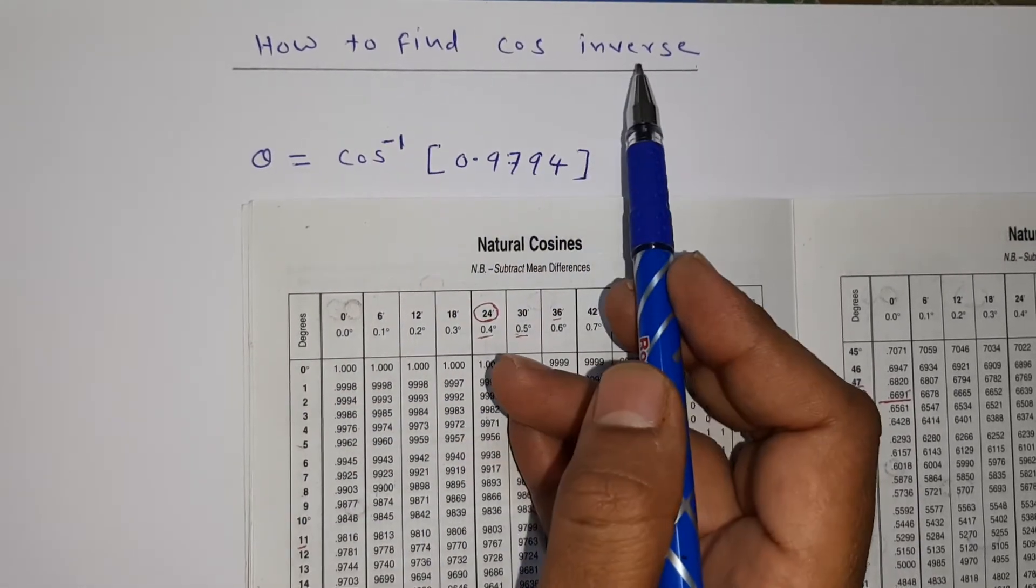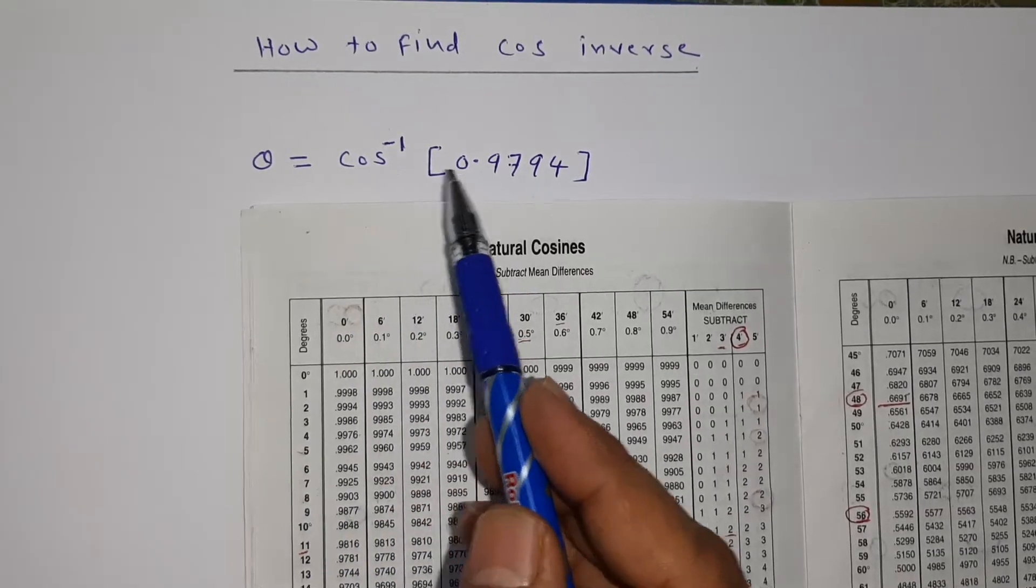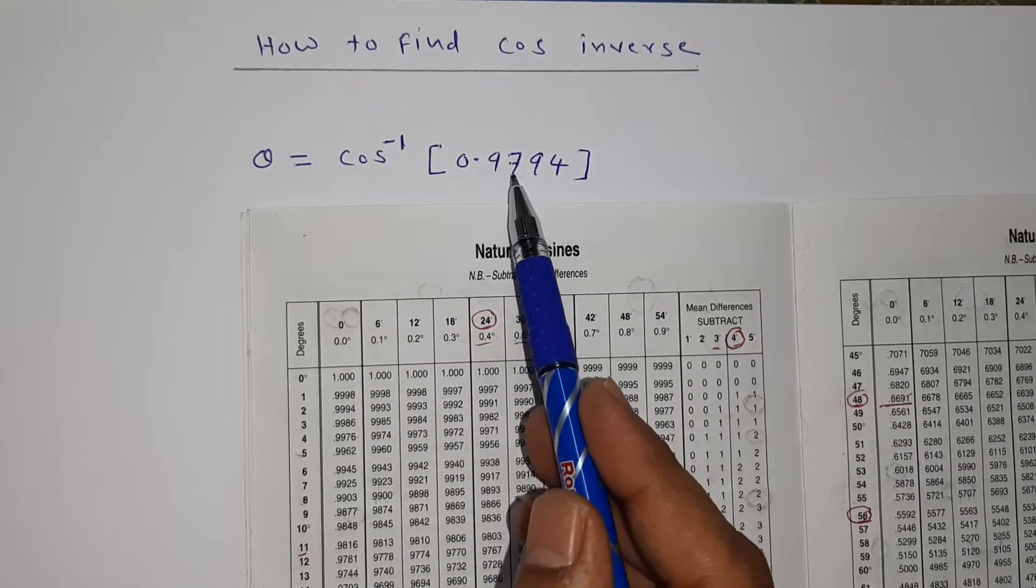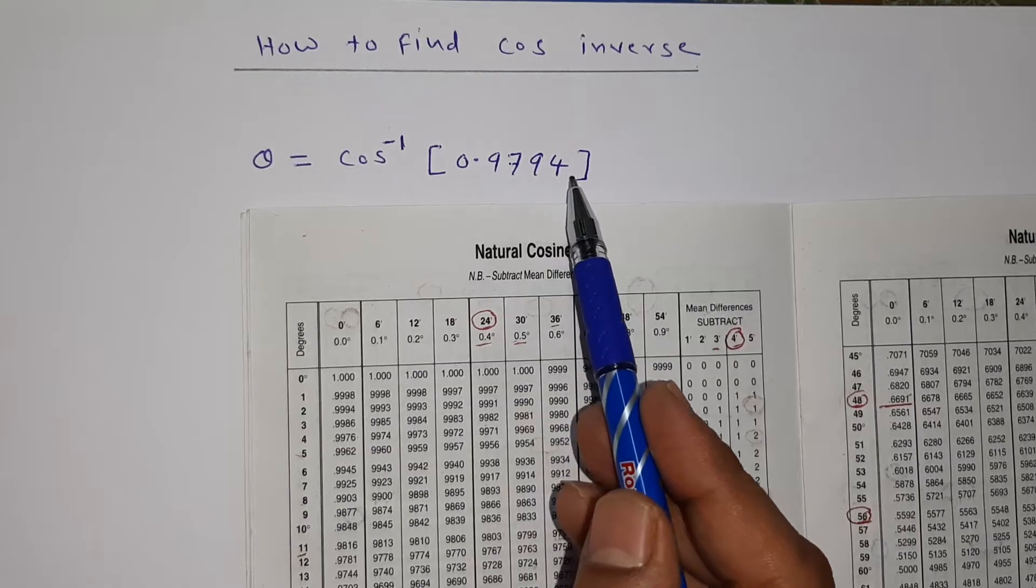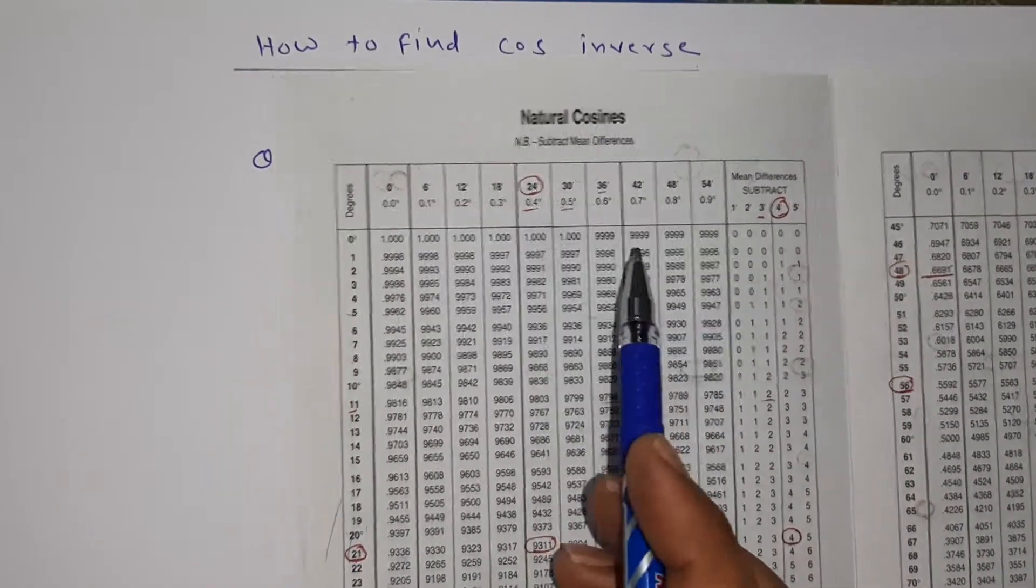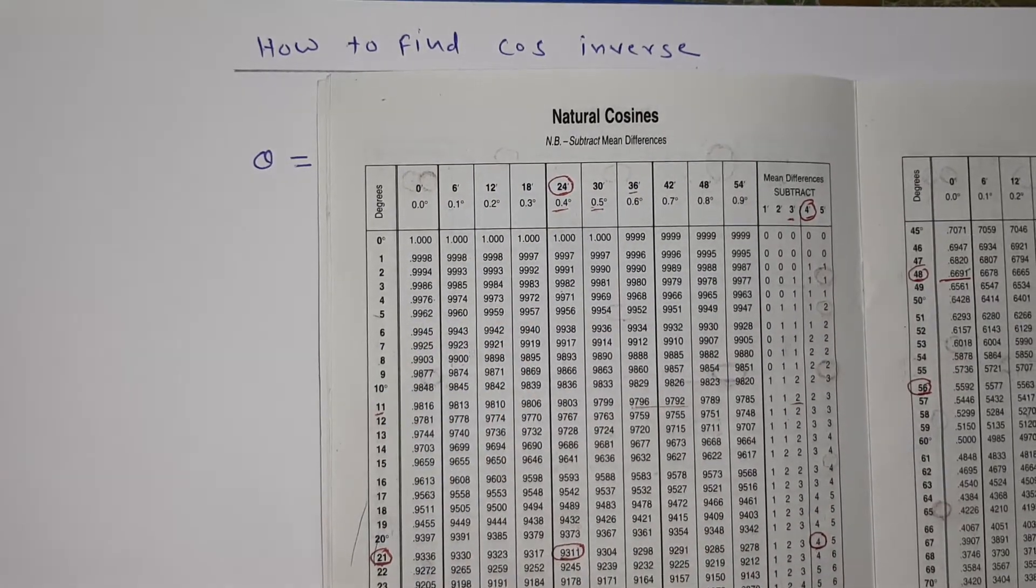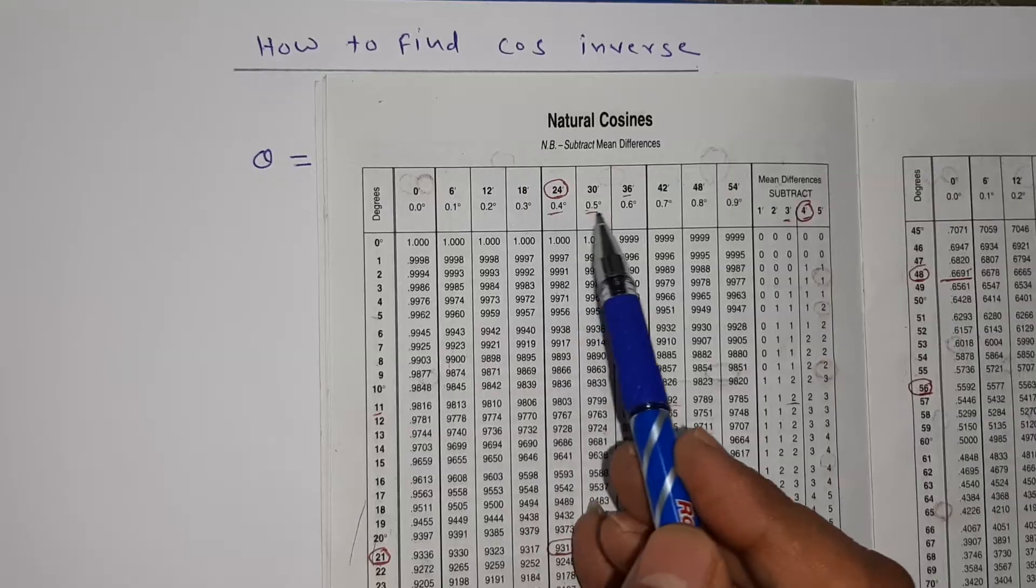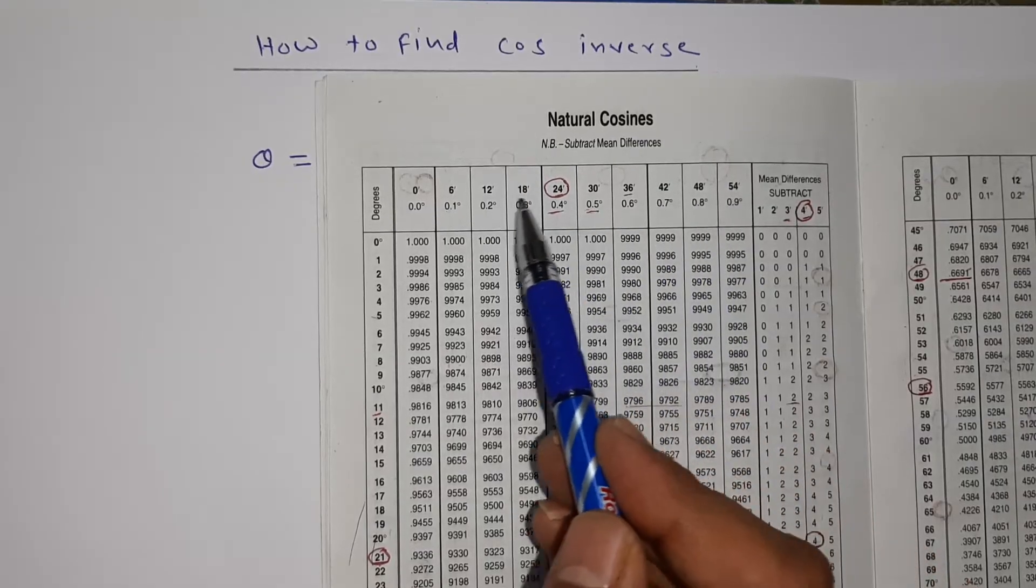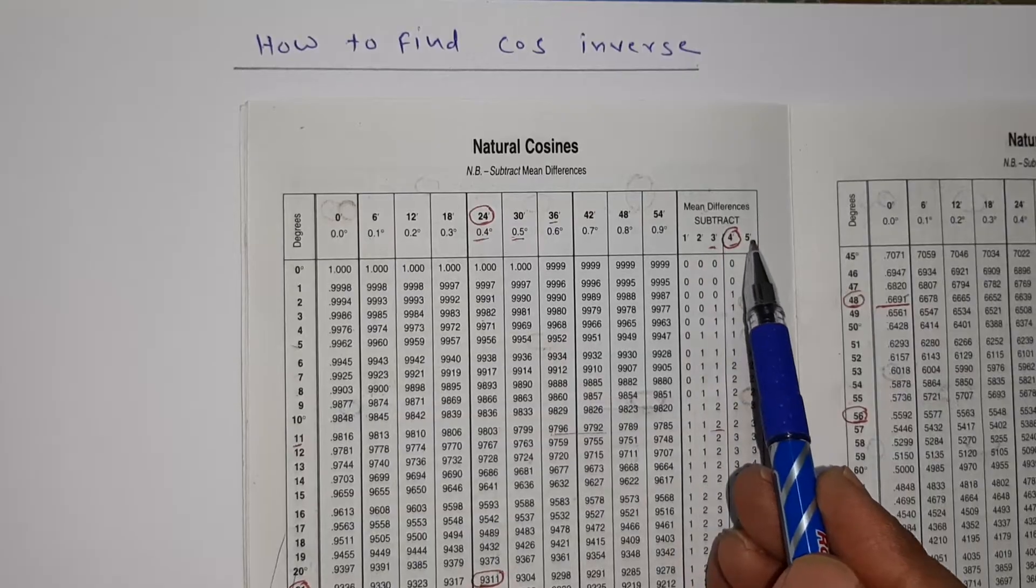How to find cos inverse. We'll see this example: theta equals cos inverse of 0.9794. This is a log table to find the cos inverse in natural cosine. Here we have in degrees, and above that we have in minutes, and mean difference. Again, we have in minutes.